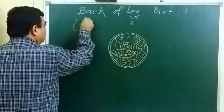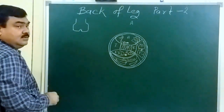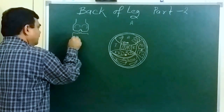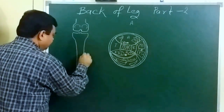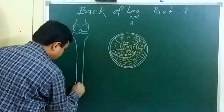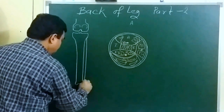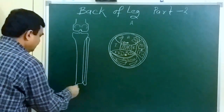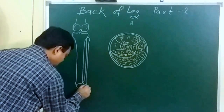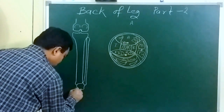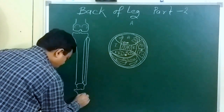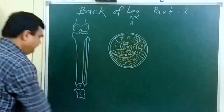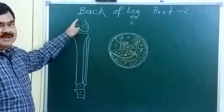Here is the condyle of the femur, and here is the condyle of the tibia. Here is the fibula. This is the talus, this is the calcaneum. This is the tibia, this is the fibula — this is the posterior aspect of the femur.